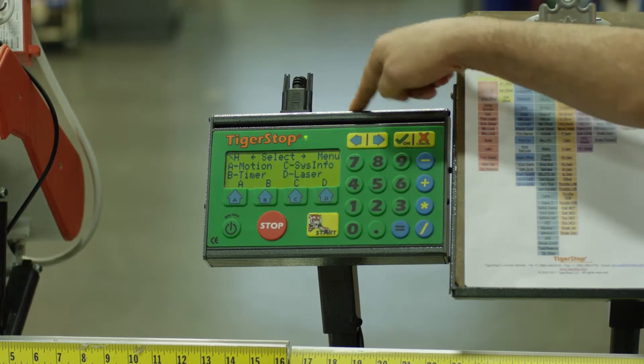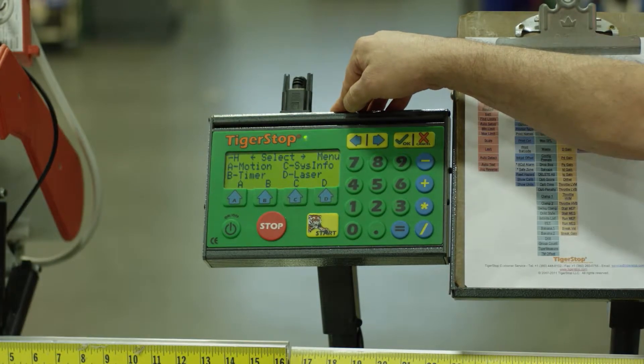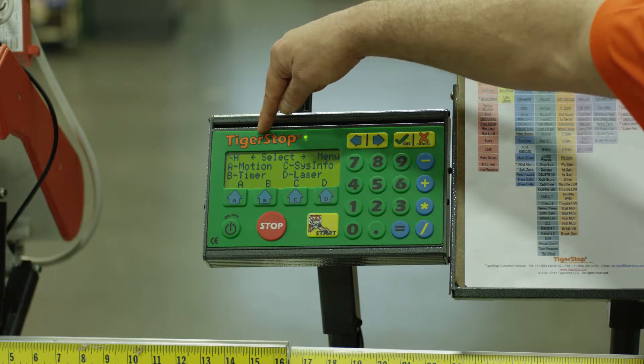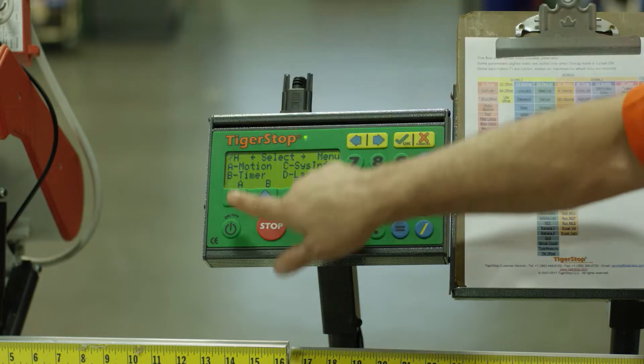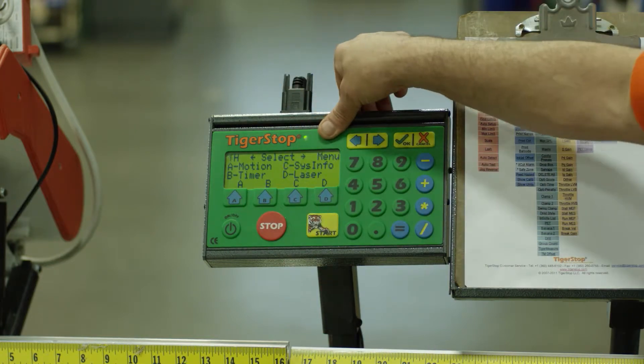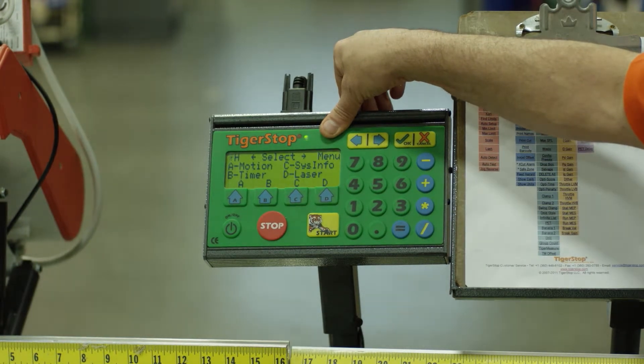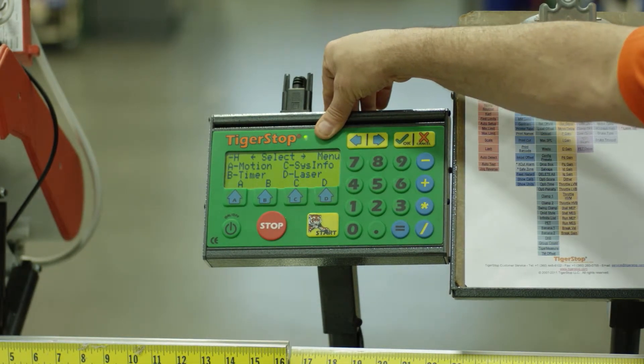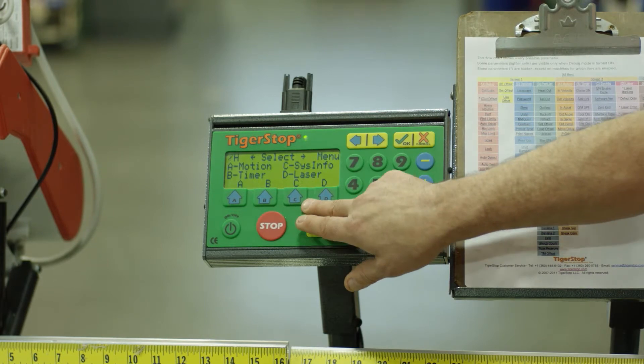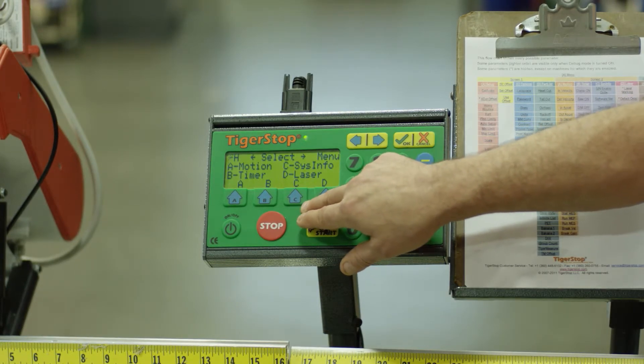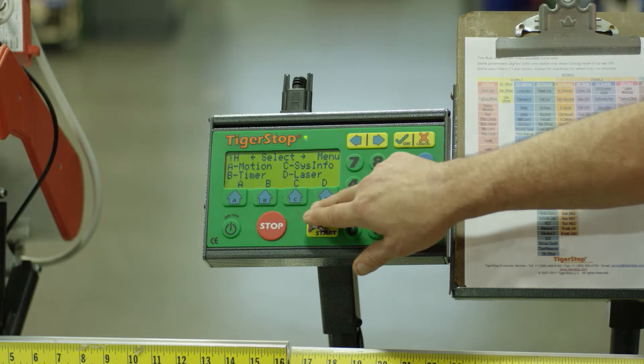Screen two, as described, is more of your maintenance and machine setting screens. Inside of here is changing your motion settings, your timers, the system information which will tell you what your software version is, what your enable code is, other important features, and should you have the optional laser setup on one of our systems, this is where it would be changed or adjusted.